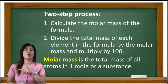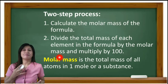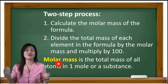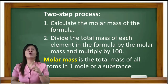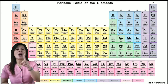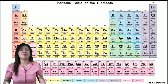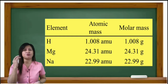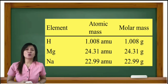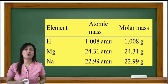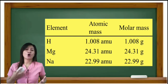Molar mass is the total mass of all atoms in one mole of a substance. The atomic masses are the molar masses of the elements. The molar mass of compounds equals the total mass of all the atoms of elements in a compound. Using the periodic table, you can determine the molar mass of individual elements. For example, one mole of hydrogen equals its atomic mass 1.01 gram, and one mole of oxygen equals its atomic mass 16.00 gram. The recorded atomic masses are hydrogen 1.008 amu, magnesium 24.31 amu, and sodium 22.99 amu — the same as their atomic mass, using grams for calculations.